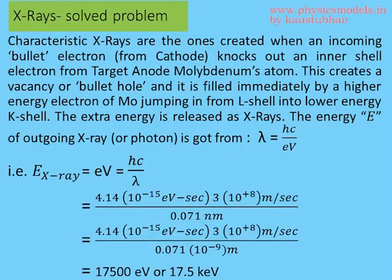Characteristic x-rays are created when incoming electrons from the cathode knock out inner shell electrons from the anode. The innermost shell is the K-shell, and when an electron is knocked out from the K-shell, an electron from the outer L-shell jumps in to fill the vacancy.